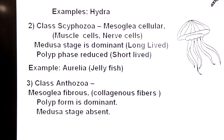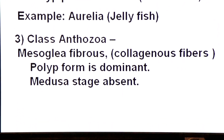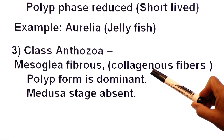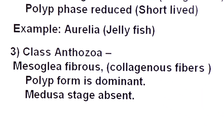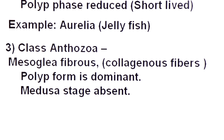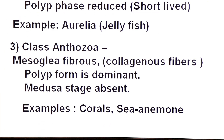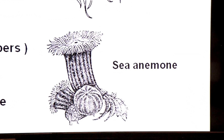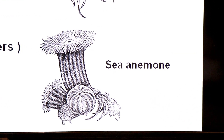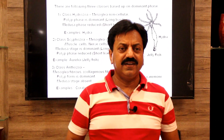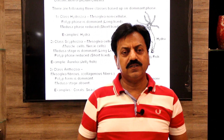Class three is Anthozoa. The mesoglea is fibrous, containing collagenous fibers. The polyp form is dominant, but the medusa stage is absent in this class. The examples are corals and sea anemones. So dear students, today we have discussed phylum Cnidaria. Thank you, dear students — wish you all the best.